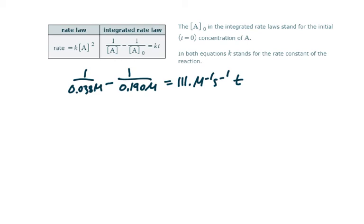So in order to find T, what we're going to have to do is move 111 over to this side. But first, let's clean up the left side before we start moving things. So what is 1 divided by 0.038? That is 26.3158 minus 1 divided by 0.190. That's 5.263.